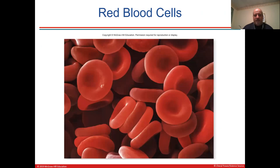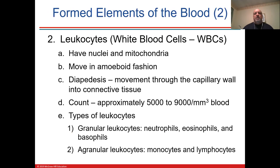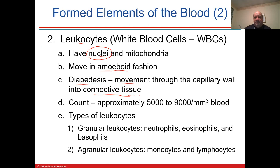These are erythrocytes. Leukocytes are your white blood cells. They have a big nucleus of different shapes. They move in amoeboid fashion, bouncing and turning. They move through capillary walls and connective tissue — this is called diapedesis. It's appropriate for white blood cells to leak out of vessels into tissues because they're phagocytes and immune cells that protect us.